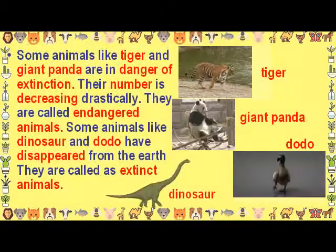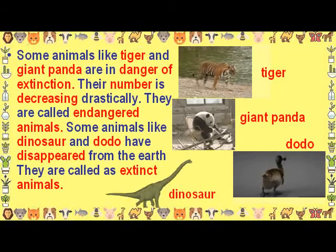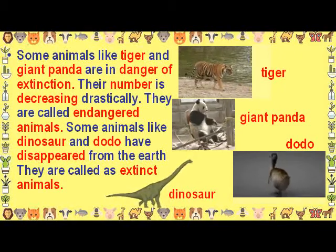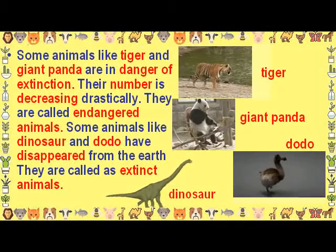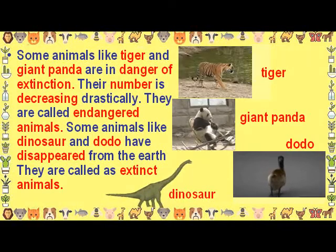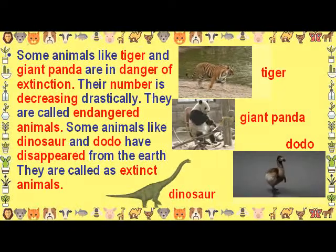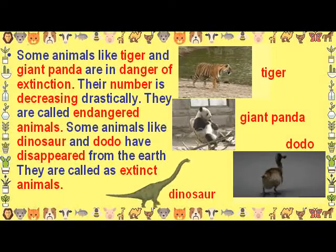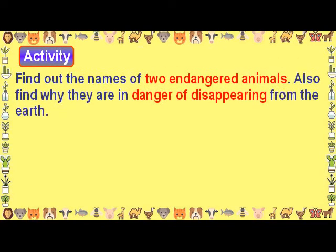Some animals like tiger and giant panda are in danger of extinction — their number is decreasing drastically and they are called endangered animals. Some animals like dinosaur and dodo have disappeared from the earth and are called extinct animals. Activity: Find out the names of two endangered animals and also find out why they are in danger of disappearing from the earth.